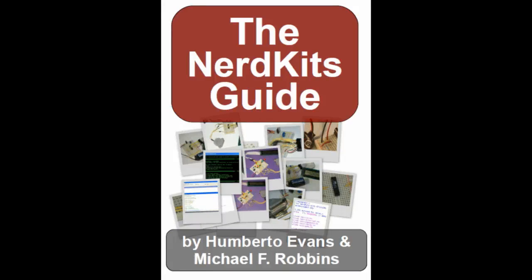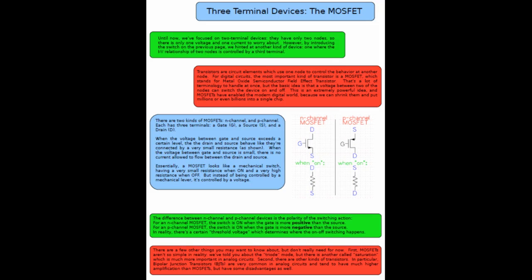Like we talked about in the NERDkit's guide, a transistor can act as a voltage-controlled switch, and for now we're going to use these 2N7000 MOSFETs that are included in the USB NERDkit.